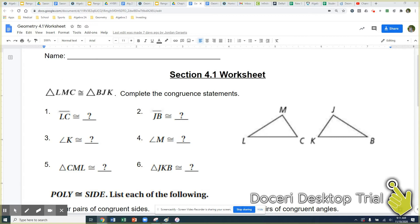So using that congruent statement we can start to make some congruence pairs down below in section one there. So we got LMC is congruent to BJK so that just tells us that everything like MC right here and JK are congruent. JB and ML are congruent.